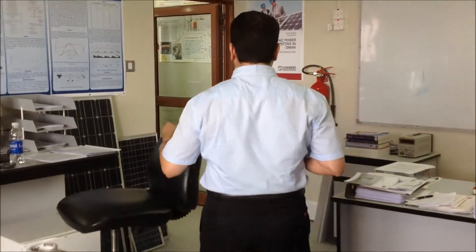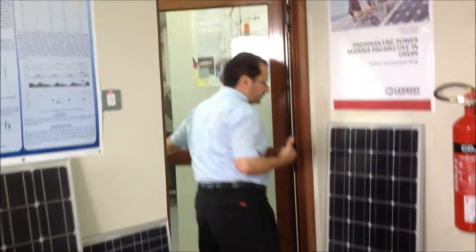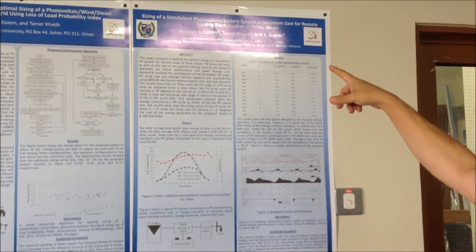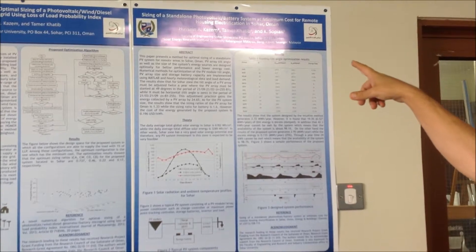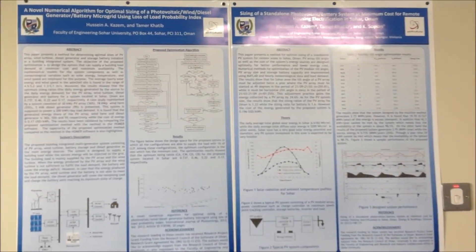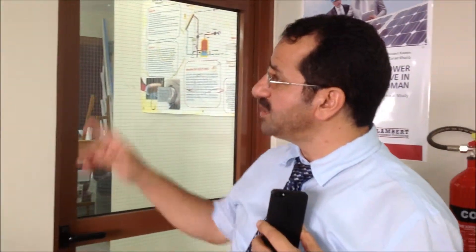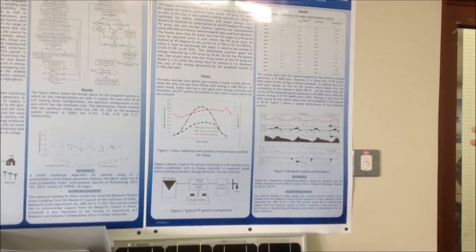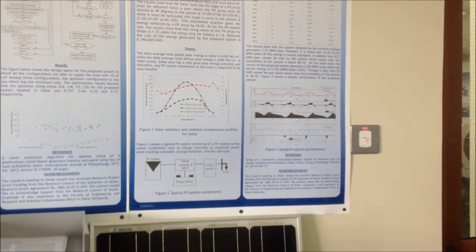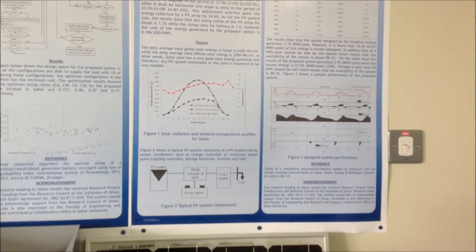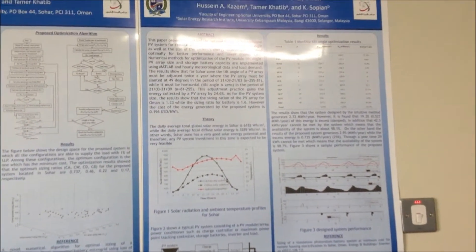Let me show you some of our achievements from this project. These are samples of our publications. The first paper here with the title Sizing of Standalone Photovoltaic Battery System at Minimum Cost for Remote Housing Electrification in Sohar, Oman. This paper has been published in Energy and Buildings in Elsevier, which is a Q2 journal with an impact factor of 2.68 in 2012. In this paper, we designed an optimum system for Oman and gave recommendations for the government and people working in this field about important parameters for the design.